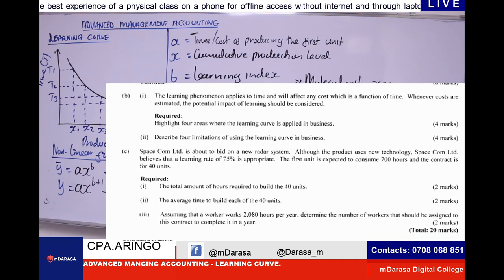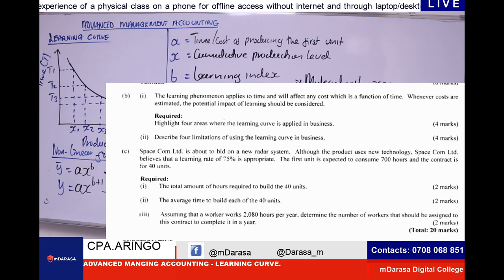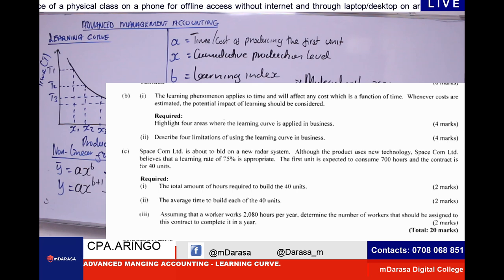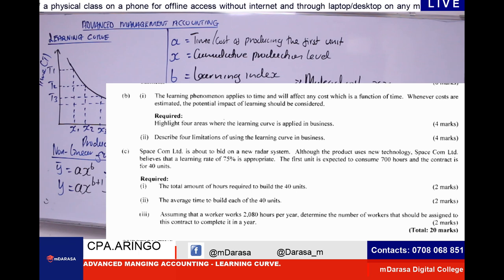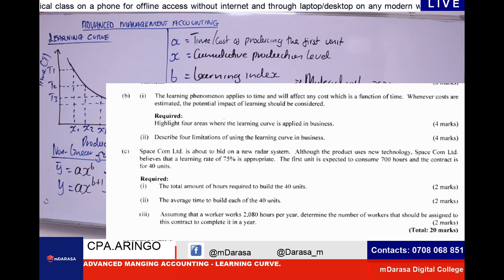So whatever Mwalimu is giving us is a whole overview and a question which will keep us up to speed in understanding the concept of learning curve. We are going through this question where we are told that Spacecom Limited is about to bid on a new radar system. Although the product uses new technology, Spacecom Limited believes that a learning rate of 75% is appropriate. The first unit is expected to consume 700 hours and the contract is for 40 units. We are required to determine the total amount of hours required to build the 40 units.